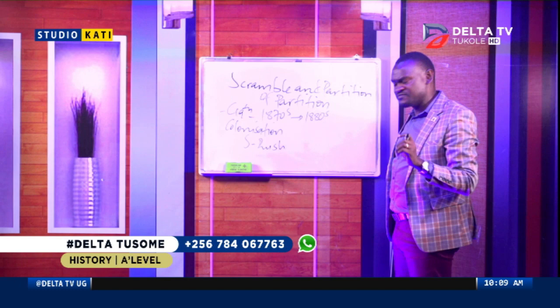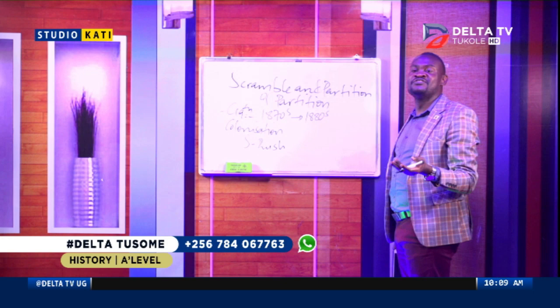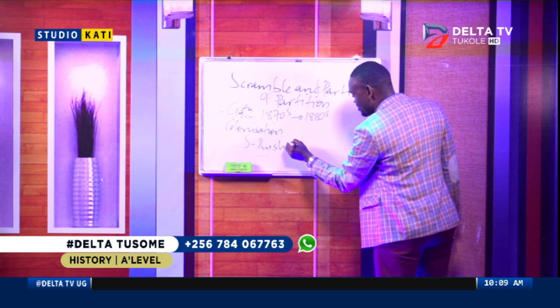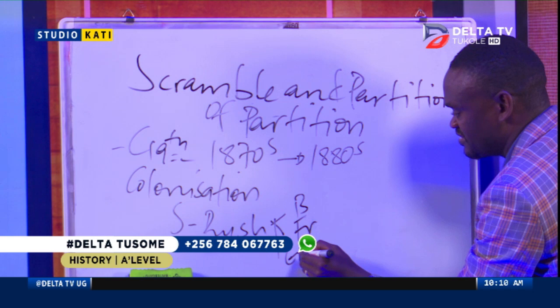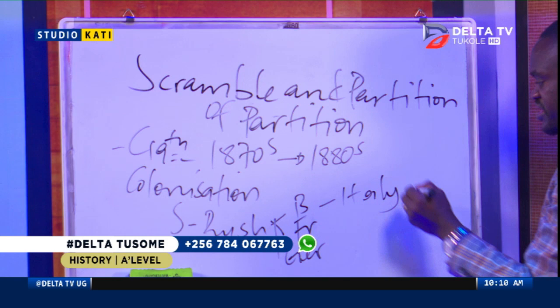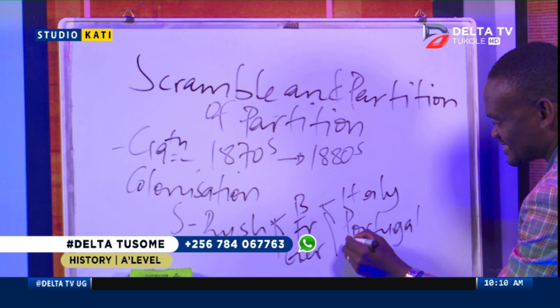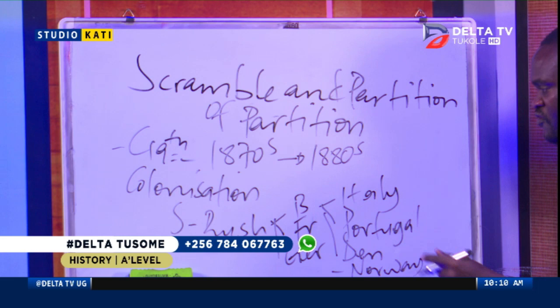This rush happened in the 19th century. There were quite a number of European powers that participated. The key players included Britain, France, and Germany — which eventually participated more so after the calling of the Berlin Conference of 1884. Other powers like Italy also joined after unification, along with smaller powers like Portugal, Denmark, Norway, and so on. That rush encompassed all these European powers.